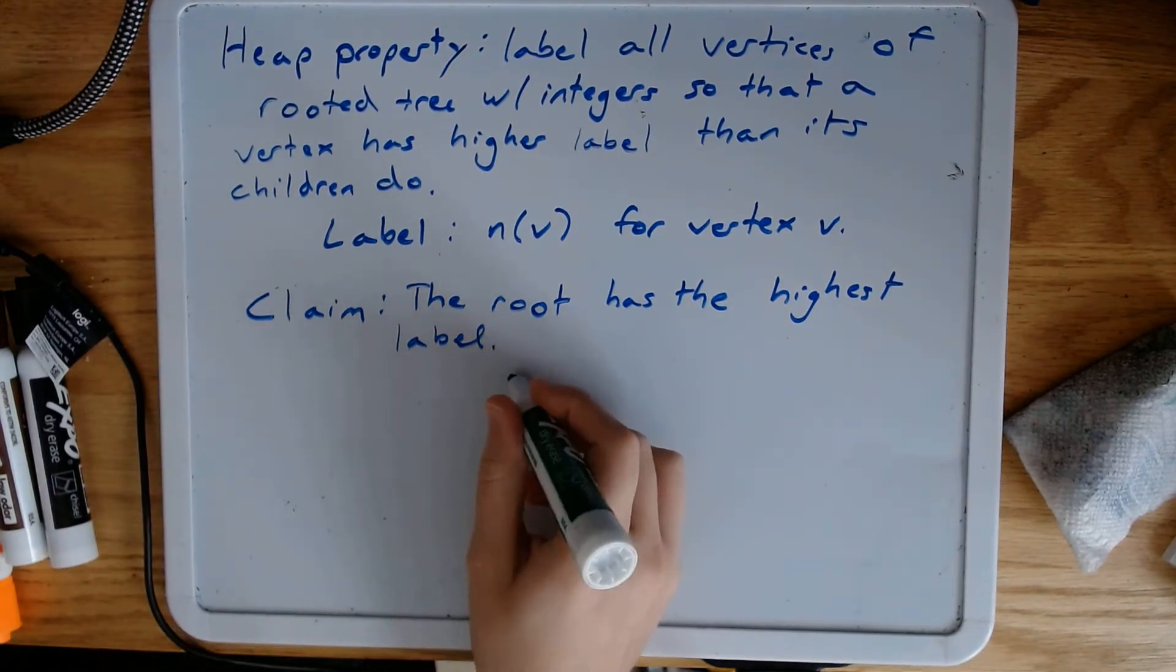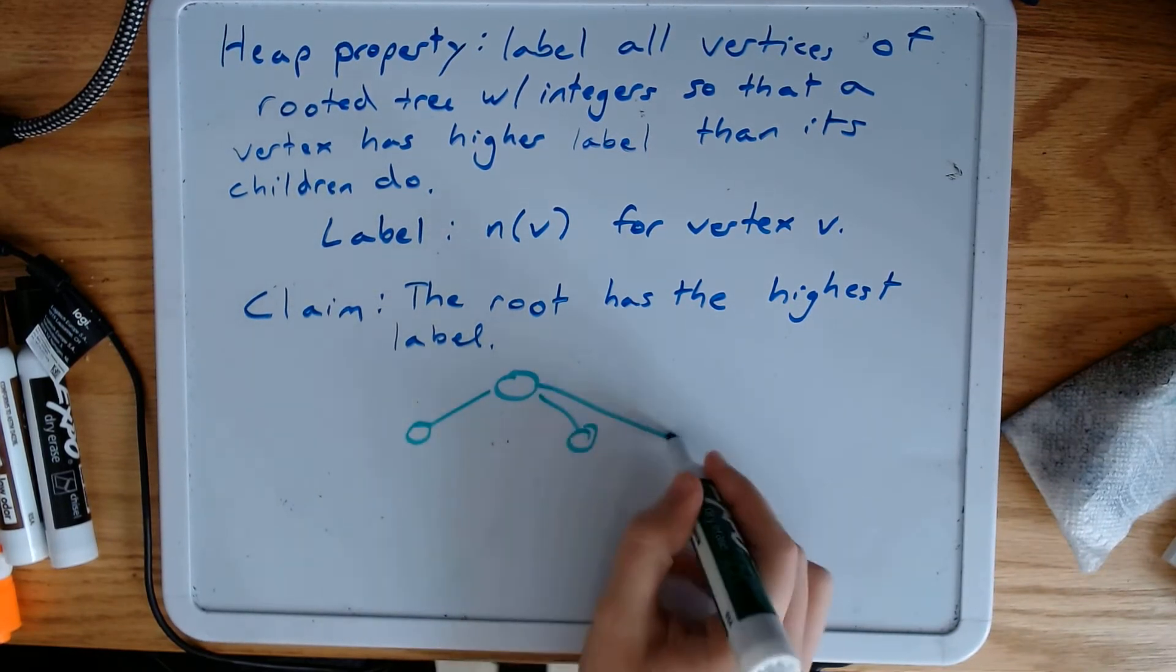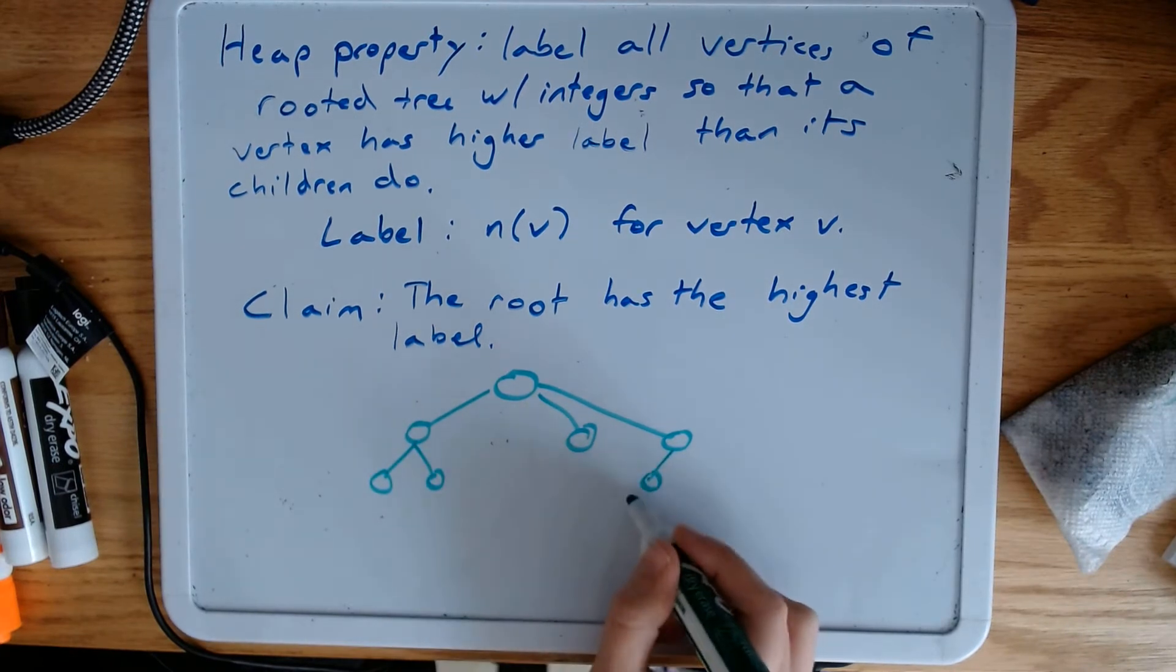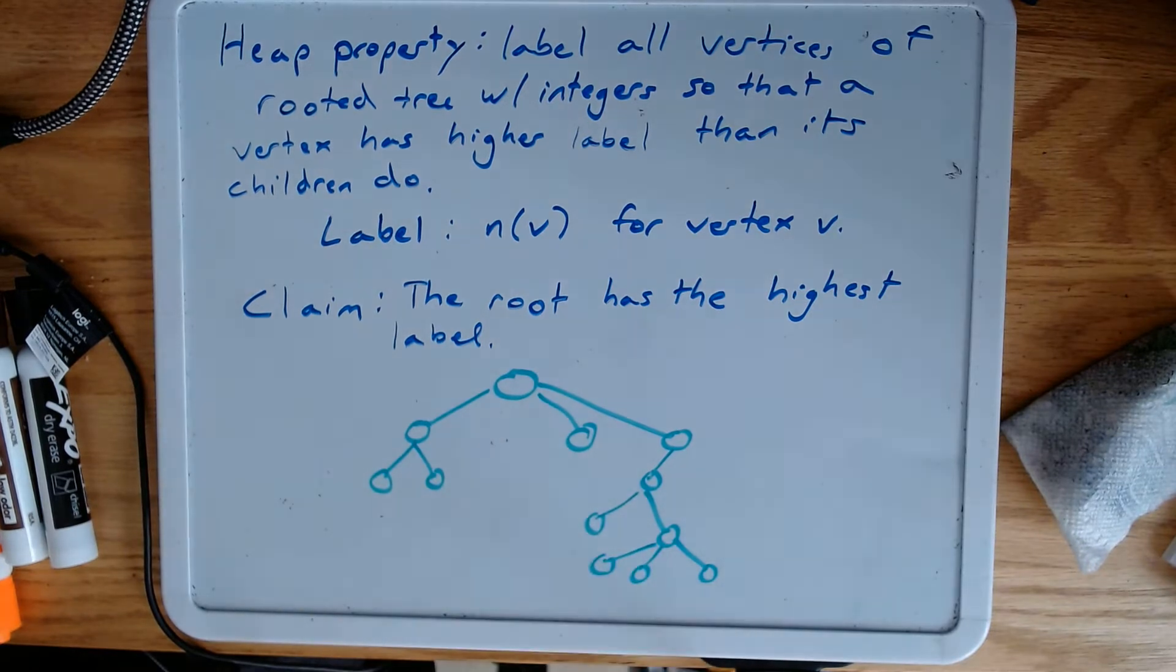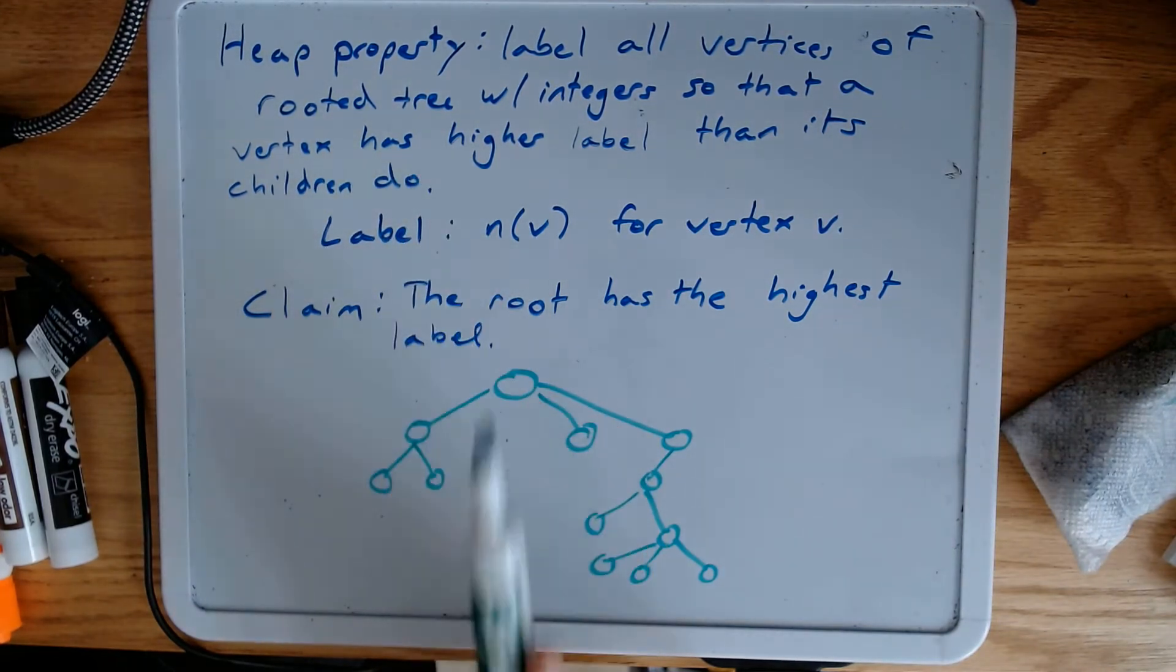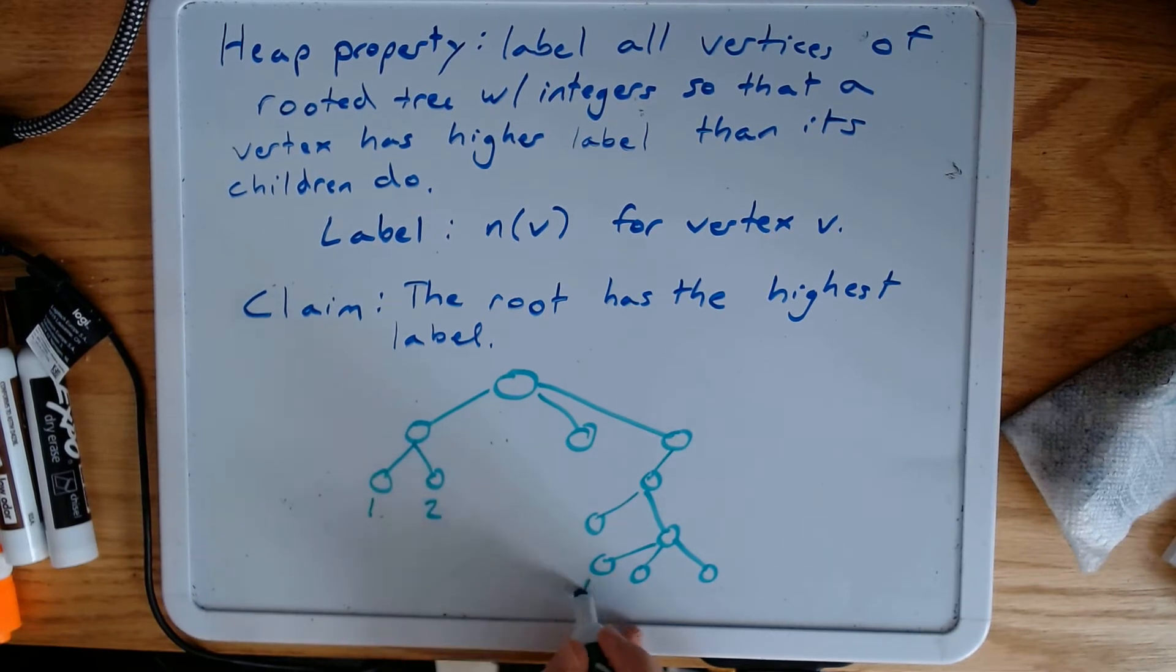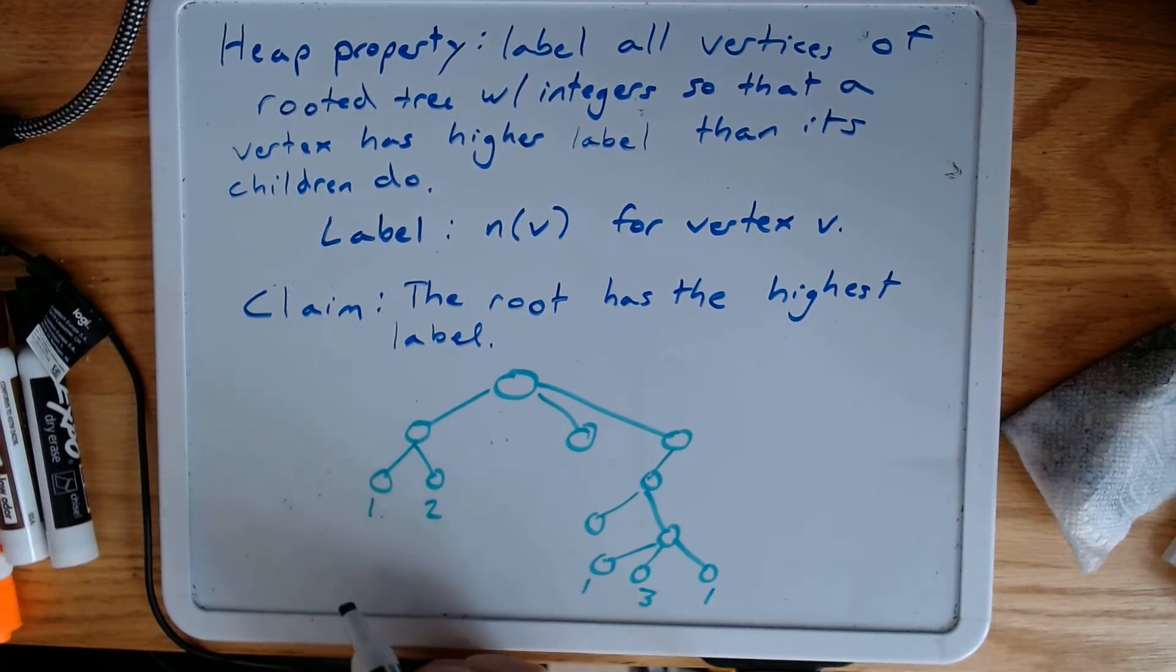Alright, so here's a rooted tree. This is the root, has some children, maybe they have children, like this. And our only property here for labeling these is this heap property. So if I label these 1 and 2 and 1 and 3 and 1. Okay, so this vertex needs a label that's higher than 1 and 2, so it could be labeled 3.